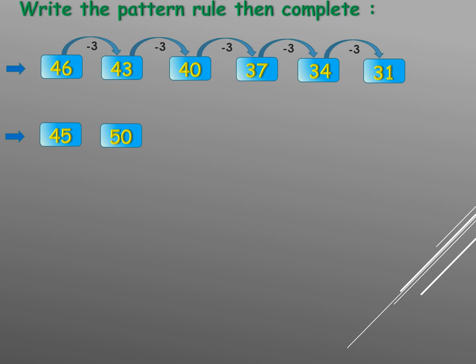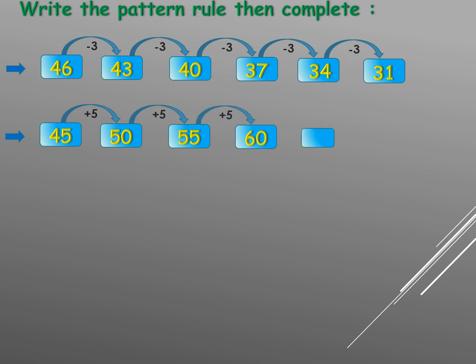Next one: forty-five becomes fifty — the number is larger, so the difference is plus five. Our rule is plus five. Fifty plus five equals fifty-five, fifty-five plus five equals sixty, sixty plus five equals sixty-five.